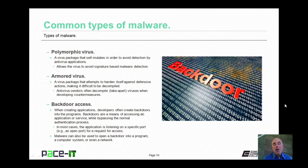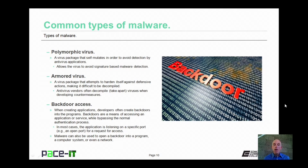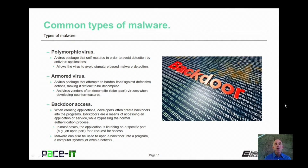Finally, we have backdoor access. This is a type of malware that may be unintentional. When creating applications, developers often create backdoors into the program. Backdoors are a means of accessing an application or service while bypassing the normal authentication process. In most cases, the application is listening on a specific port for a request for access. If the developer forgets to shut the backdoor, you may have an application that gets into production with an open backdoor. Also, there is malware that can be used to open a backdoor into a program, a computer system, or even a network.